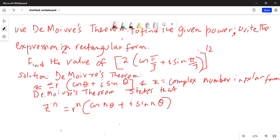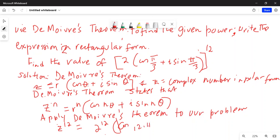Therefore, applying De Moivre's theorem to our problem, we get z to the power of 12 is equal to 2 to the power of 12 multiplied by cosine of 12 pi over 3 plus i sine 12 pi over 3.